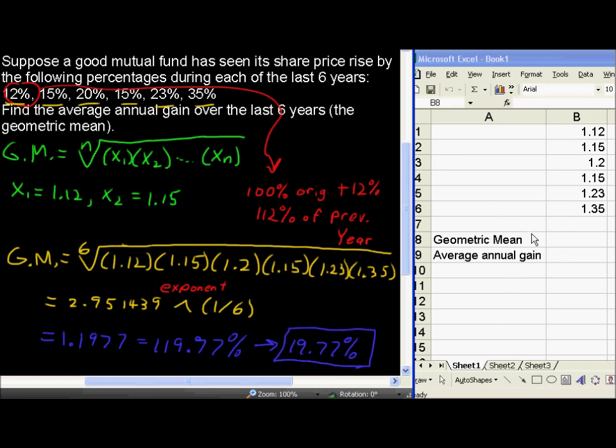Alright, in Excel, I've got the numbers already written down here, the 1.12 and so on. The formula is actually GeoMean. So you would type in equals GeoMean.